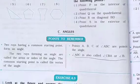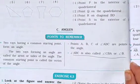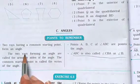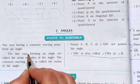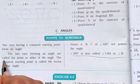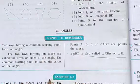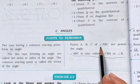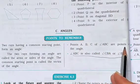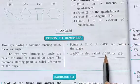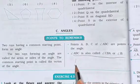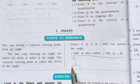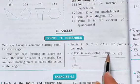Next point: Angles. Two rays having a common starting point form an angle. The two rays forming an angle are called the arms or sides of the angle. The common starting point is called the vertex of the angle. For triangle ABC, the angle at B is written as angle ABC, also called angle CBA or simply angle B — the middle letter denotes the vertex.